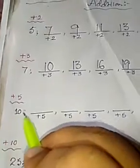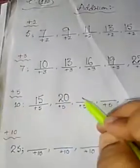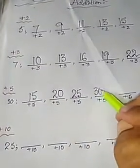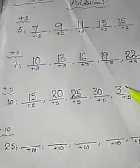Now addition of 5. 10 plus 5 that is 15, plus 5 that is 20, 25, 30, 35.